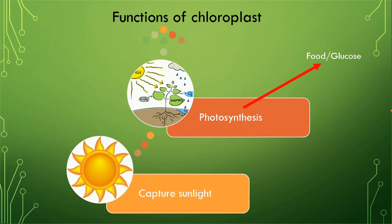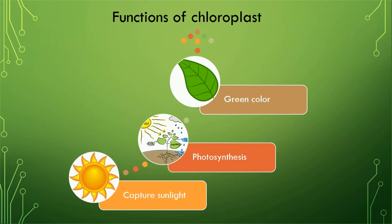The third function is that chloroplast, because of the presence of chlorophyll, provides green color to the plant cells. If you look at different parts of a plant, you can see that only leaves have green color. Although other pigments are also present — for example, a rose is red in color, and other flowers have different colors — green color is only present in leaves because of the presence of chloroplast.